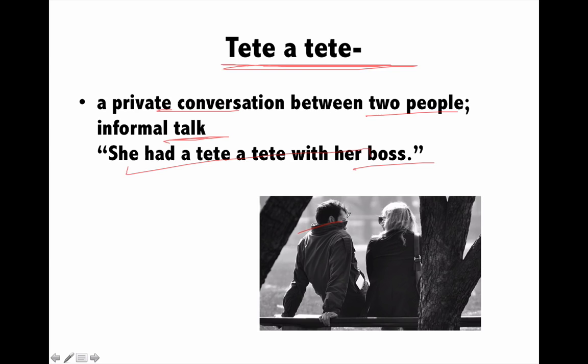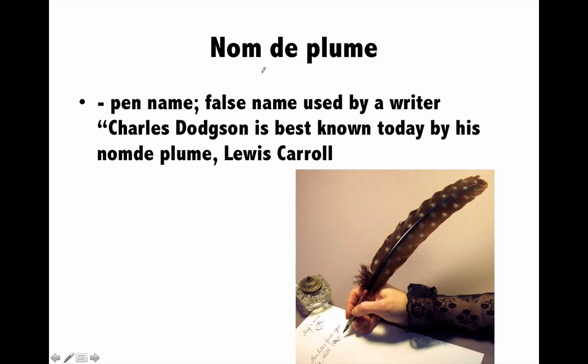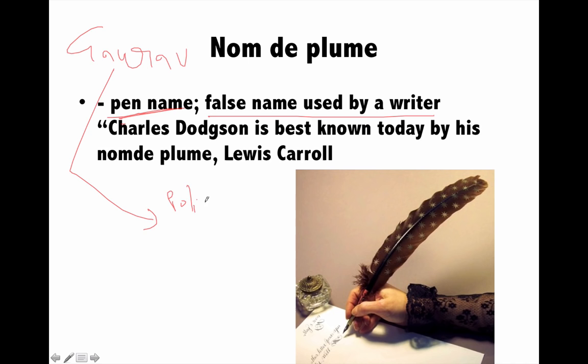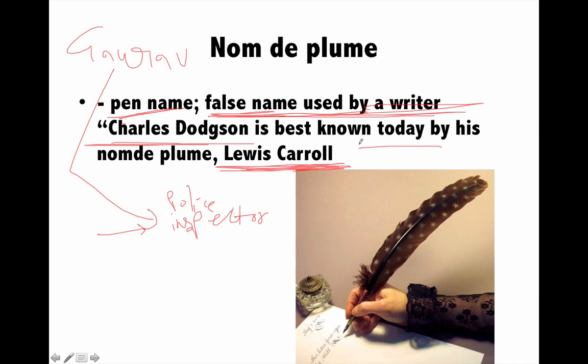Next is 'nom de plume', a French word meaning a pen name — a false name used by a writer. For example, my name is Gaurav but in my novel I give the police inspector character a different name. A famous example: Charles Dodgson is best known today by his nom de plume, Lewis Carroll — the famous poet.